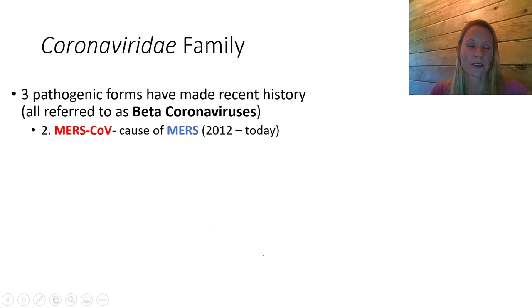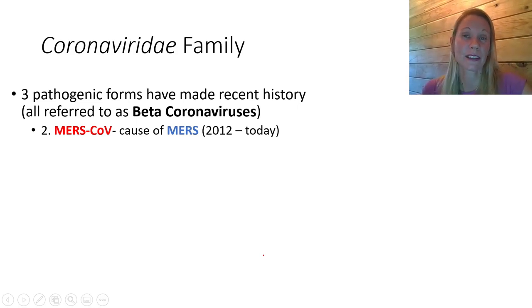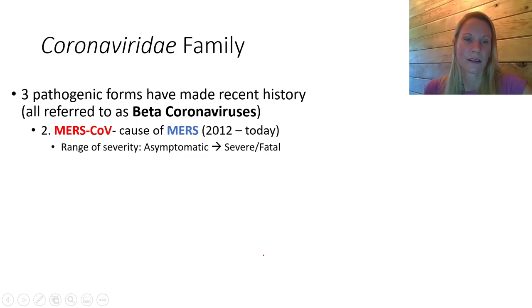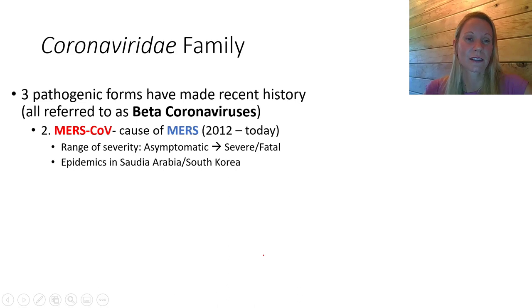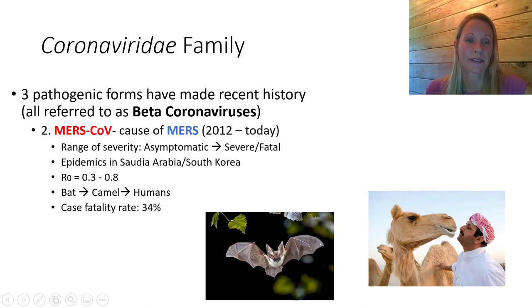About 10 years later, MERS evolved. MERS-CoV is the name of the virus, the cause of MERS — Middle East Respiratory Syndrome. There's a range of severity from asymptomatic to severe or fatal reactions. It seemed to have originated in Saudi Arabia, with epidemics there and in South Korea. The R0 is fairly low. Transmission was from bats — another zoonotic spillover — from bats into camels and then into humans, particularly through drinking camel milk. This has a very high case fatality rate of 34%.